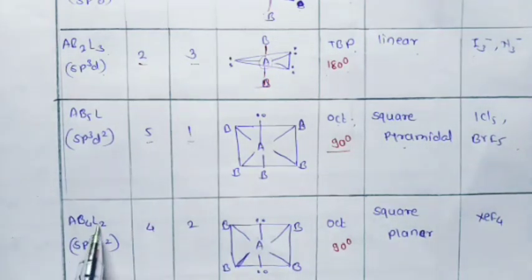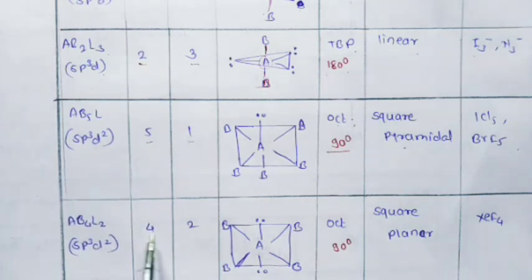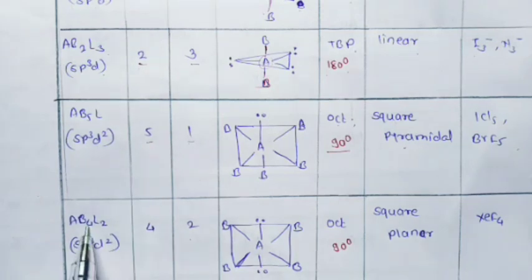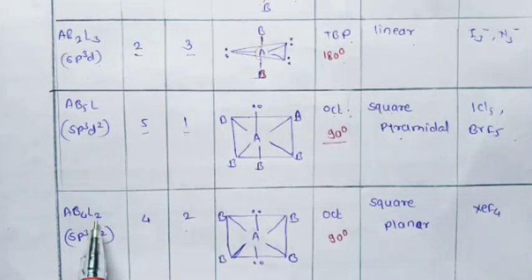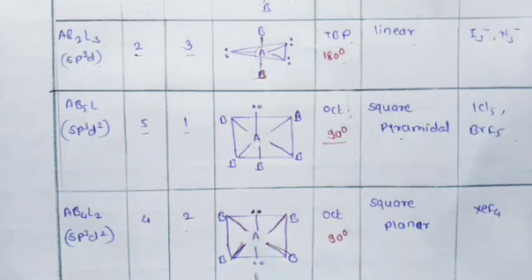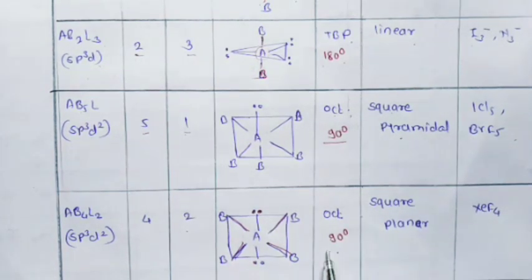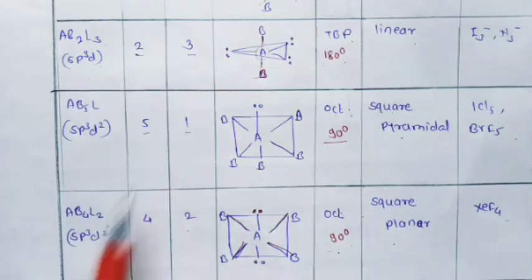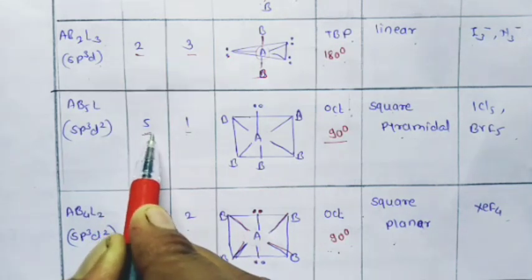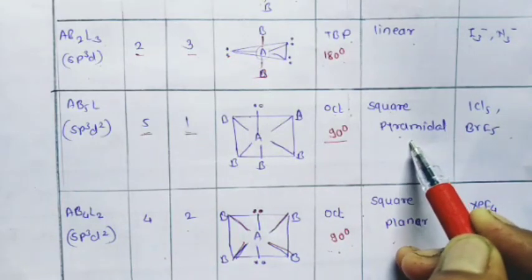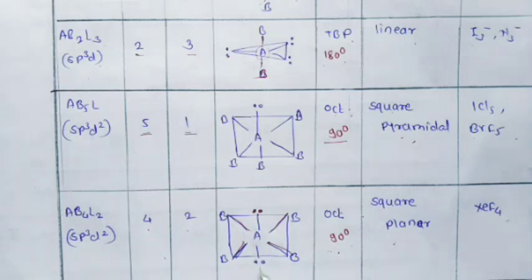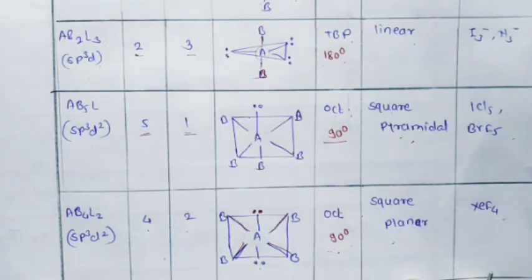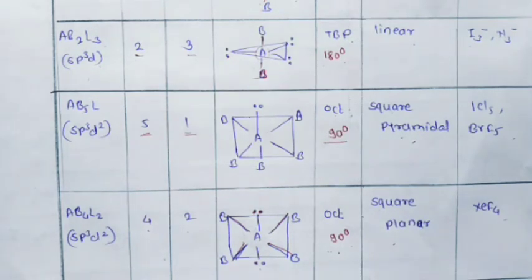For AB4L2 (SP3D2 hybridization): total 6 valence electron pairs, with 4 bond pairs and 2 lone pairs. Geometry is octahedral; bond angle 90 degrees. Shape is square planar — example: ICl4⁻. To summarize: with 6 total electron pairs, if there are 5 bond pairs and 1 lone pair, the shape is square pyramidal; if there are 4 bond pairs and 2 lone pairs, the shape is square planar. The number of bond pairs and lone pairs determines the arrangement and shape.